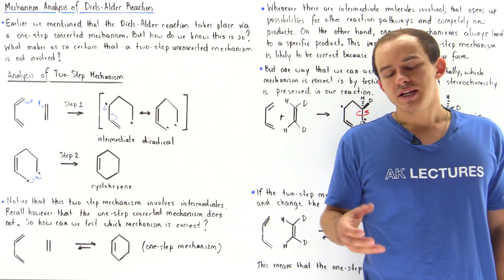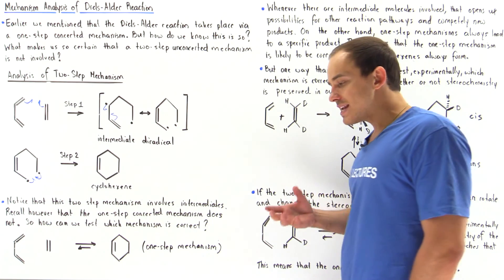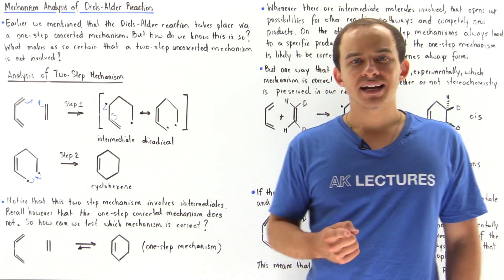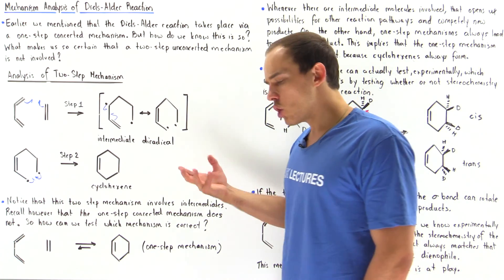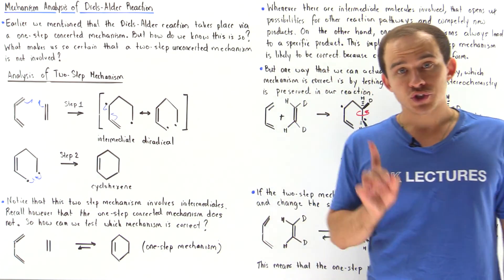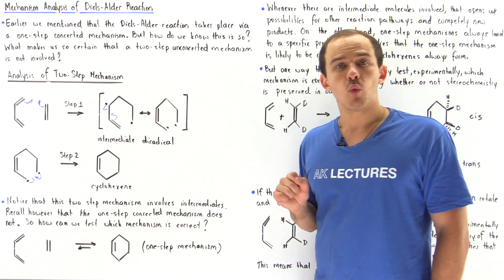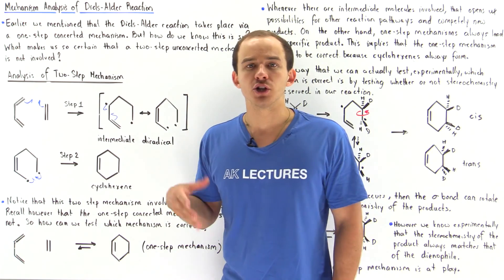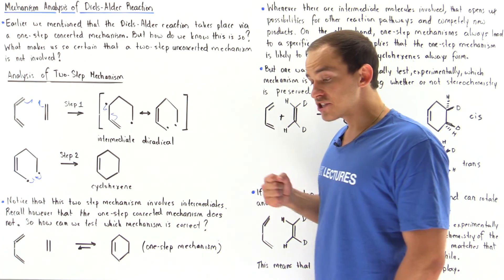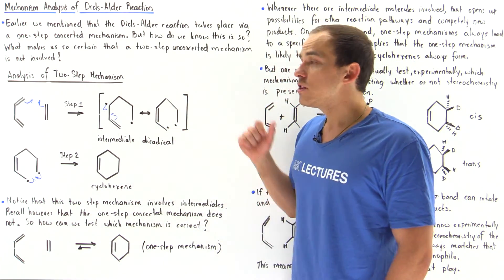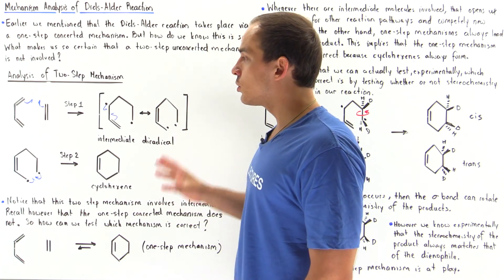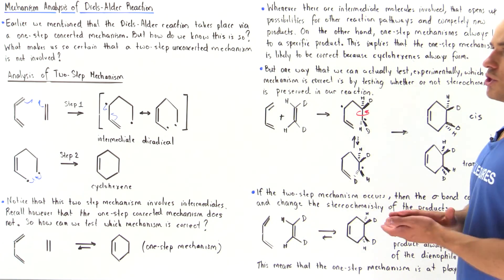In our introduction to the Diels-Alder reaction, we said that our reaction mechanism is a one-step concerted mechanism. The question we're going to explore in this lecture is how are we so certain? Why are we so certain that the reaction is via a one-step mechanism and not a two-step unconcerted mechanism? We're going to compare the one-step mechanism to the two-step mechanism and see why the one-step mechanism is correct for the Diels-Alder reaction.